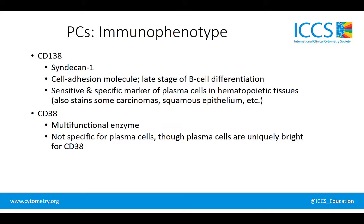Let's take a brief look at what some of these markers actually are. CD138 is also called syndecan-1. It's a cell adhesion molecule present in the late stage of B cell differentiation. It is a sensitive and specific marker of plasma cells in hematopoietic tissues, however in other tissues it is not specific. CD38 is a multifunctional enzyme that is also not specific for plasma cells, though plasma cells are uniquely bright for CD38, which we saw in some of those earlier plots.